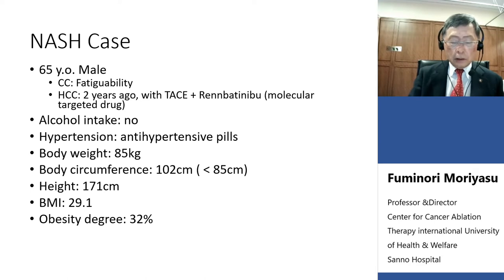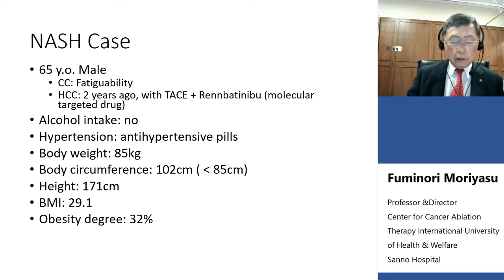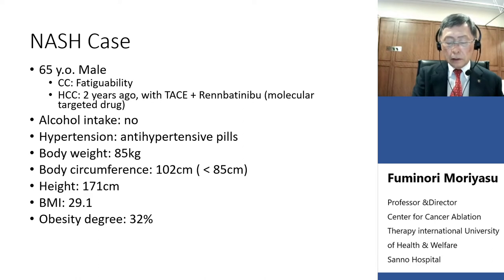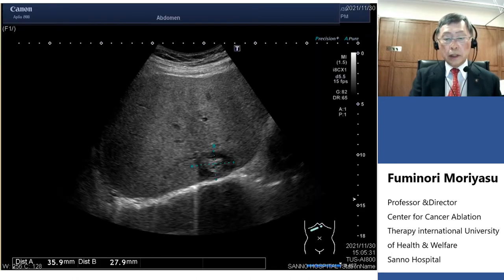I show you a typical case of NASH. What stage of NASH is this case? The chief complaint is occasional fatigue. No alcohol intake. Hypertension is treated with antihypertensive pills. Body weight is 85 kg and body circumference is 102 cm — a typical metabolic syndrome presentation with a body fat percentage of 32%.